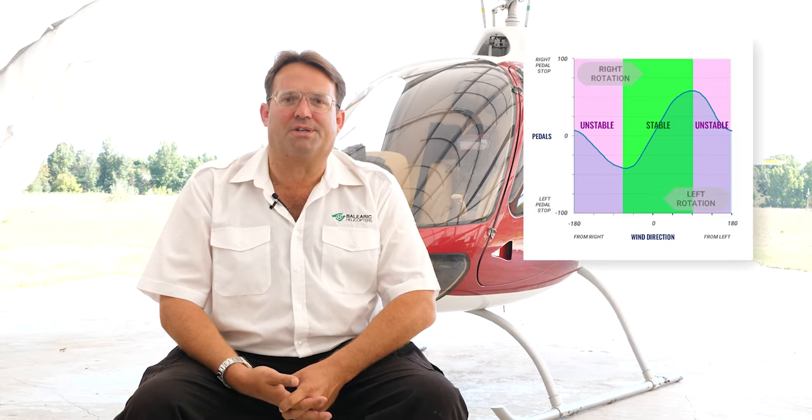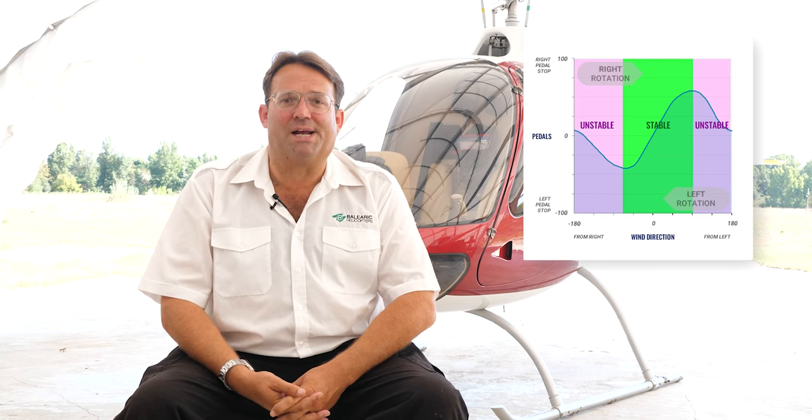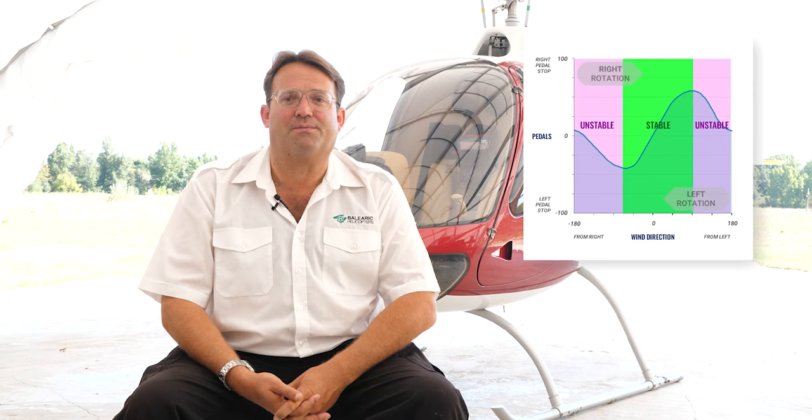There are two areas on this curve. In the unstable area, a small variation of the wind direction leads to a large variation of heading. For example, when you are taxiing with a tailwind, you can be over-controlling on the pedals. A second point: the higher the airspeed or wind speed, the higher the curve. For the same rotation on the yaw axis, the required inputs on the pedals are larger with airspeed than in the hover.